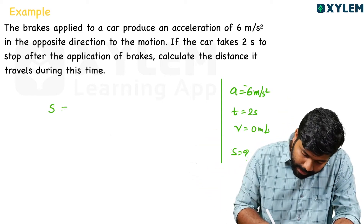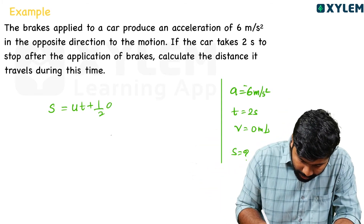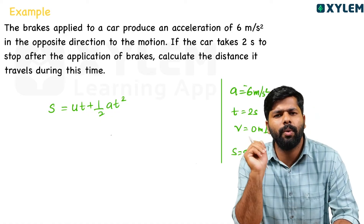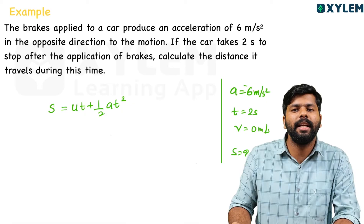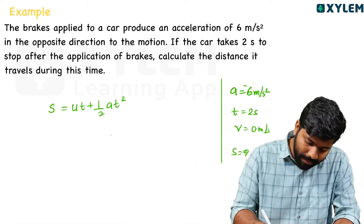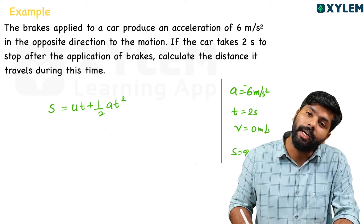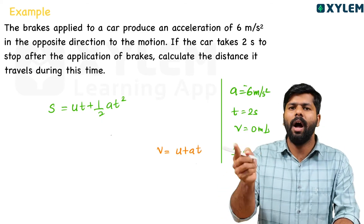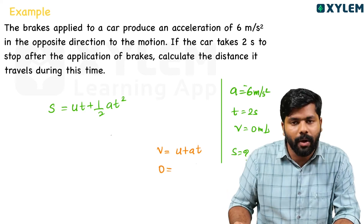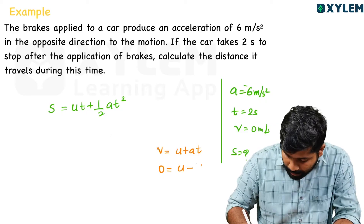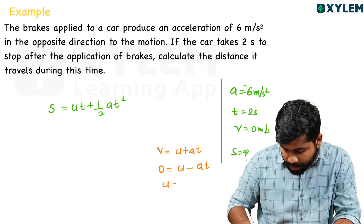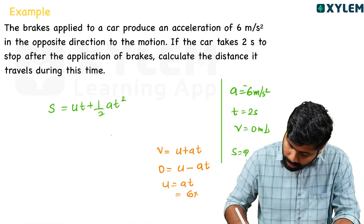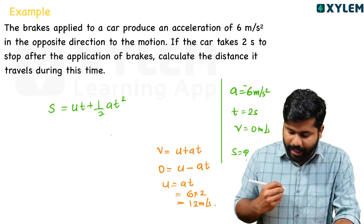We use s equals u·t plus half a·t². But we need to find u first using v equals u plus a·t: 0 equals u minus 6 into 2, so u equals 12 m/s. Now substituting into the displacement equation: s equals 12 into 2 plus half into minus 6 into 2², which gives 24 minus 12 equals 12 metres.